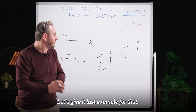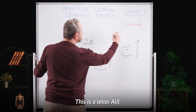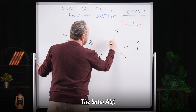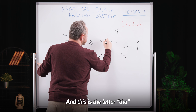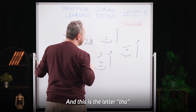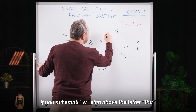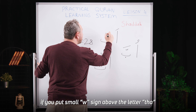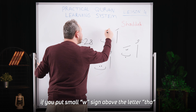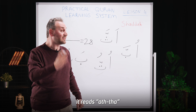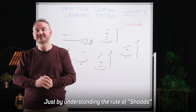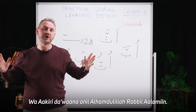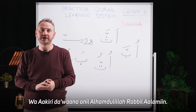Let's give a last example. This is the letter Alef and this is the letter T. If you put a small W sign above the letter T, it reads A-T. Just by understanding the rule of Shaddah, you have covered lesson four. وَآخِرُ دَعْوَانَا أَنِ الْحَمْدُ لِلّٰهِ رَبِّ الْعَالَمِينَ